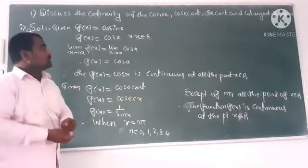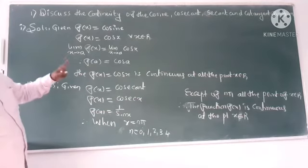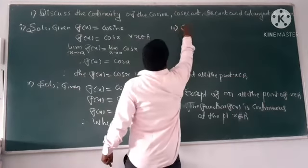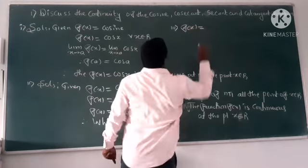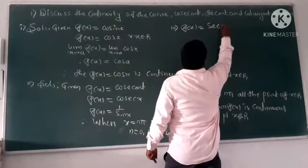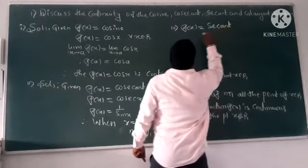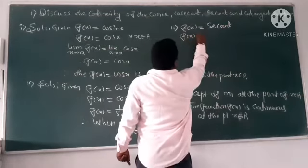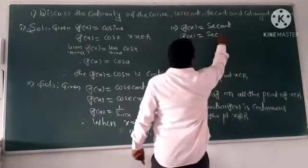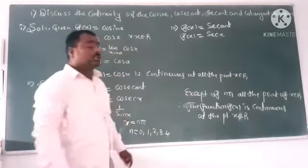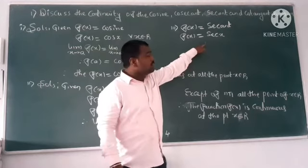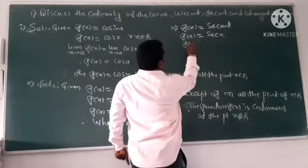Here observe, f of x is equal to secant function. Right? Secant. So f of x is equal to what is the value? Sec x or sec theta. This is the form of function. I can express in the form of trigonometric form. So when we are going to take f of x is equal to one by cos x. Right? One by cos x because secant.